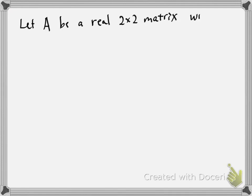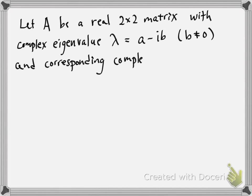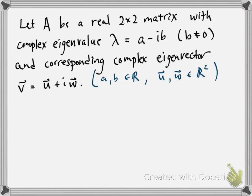So let A be a real 2×2 matrix with complex eigenvalue λ = a - ib, where b is not 0, and corresponding complex eigenvector v, which we write as u + iw. Here, a and b are real numbers, and u and w are vectors in ℝ².